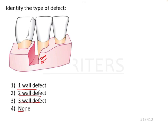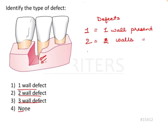The basic fundamental rule for understanding defects is: a 1-wall defect means 1 wall is present, a 2-wall defect means 2 walls are present, and a 3-wall defect means 3 walls are present.